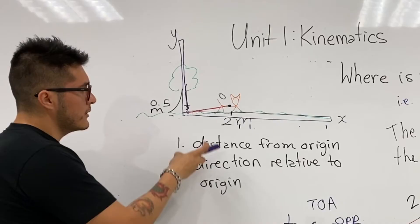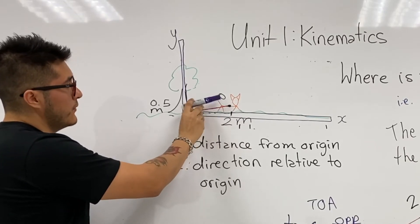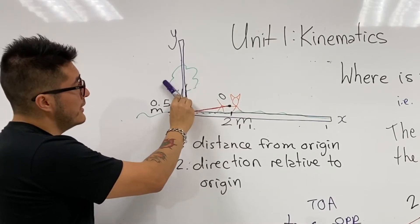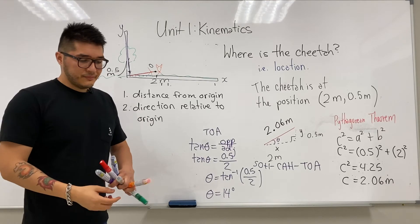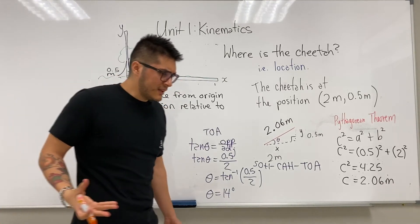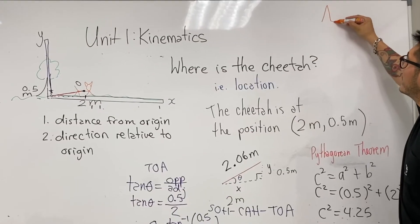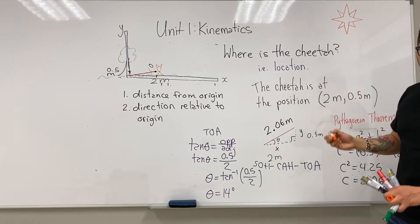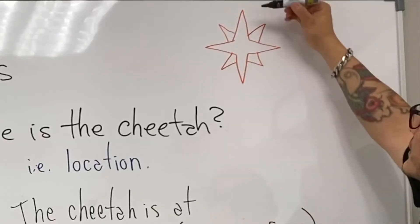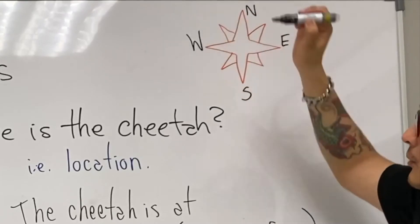But 14 degrees alone is still not very clear — 14 degrees could be from the right going up, from the right going down, from the top of the tree to the right, or to the left. It's not clear. This is where, like sailors who look at the stars to figure out directions, we use the golden compass — the rose compass — which tells us north, east, south, west.